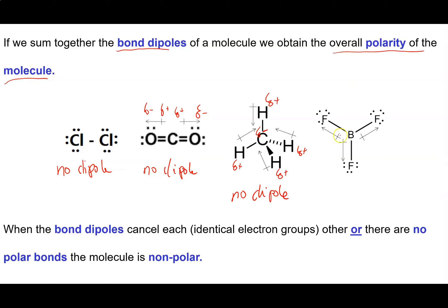Boron trifluoride, the same deal. This one's pulling up and to the left. This one's pulling up and to the right. So the left and right components cancel out. This one's pulling down and that cancels out the other components of them. There isn't a negative end and a positive end to this molecule. It's kind of all over the place. So what we're really saying is that when the bond dipoles cancel out, when you have identical electron groups or there are no polar bonds in your molecule, then your molecule will be non-polar.